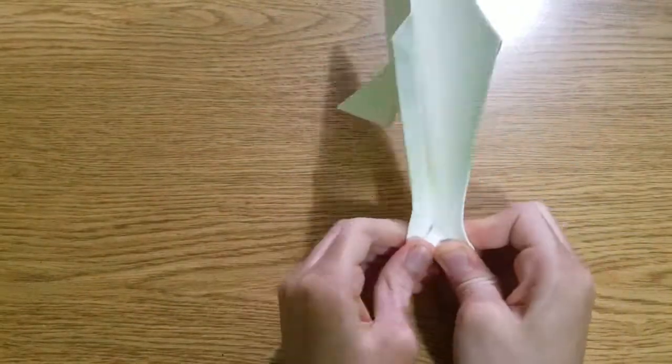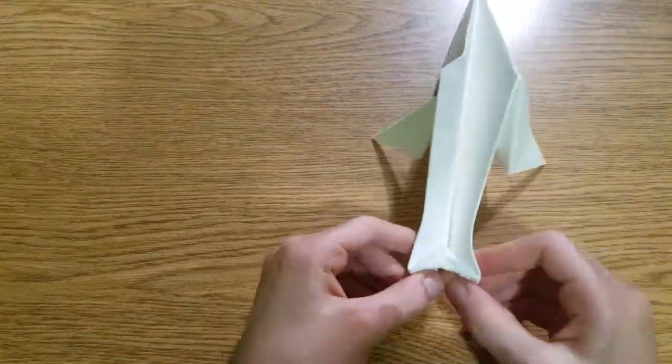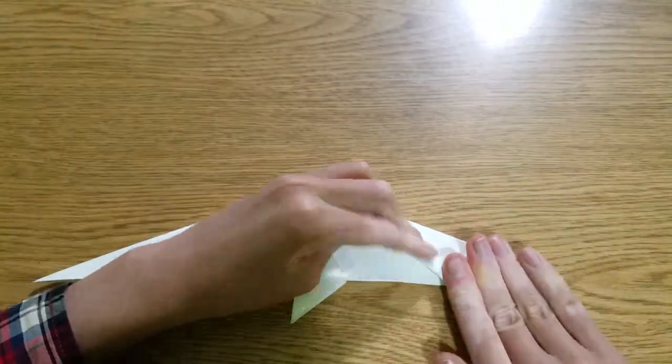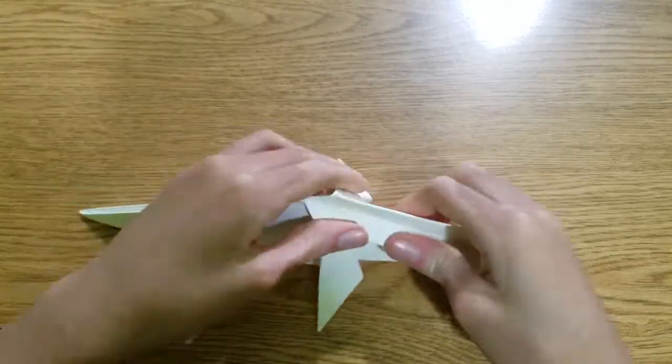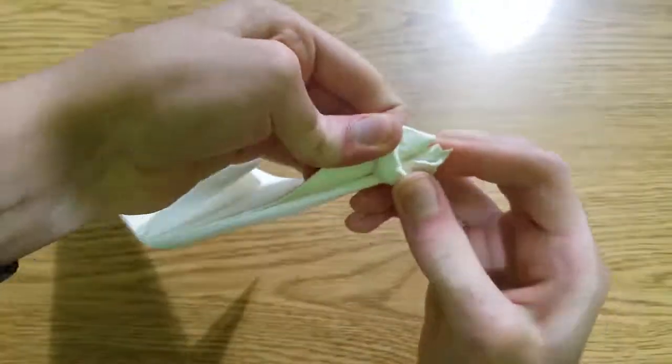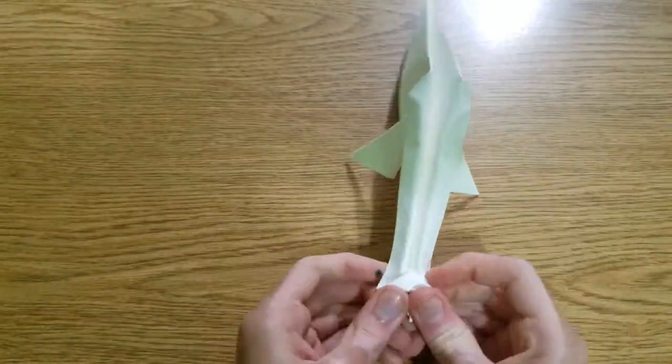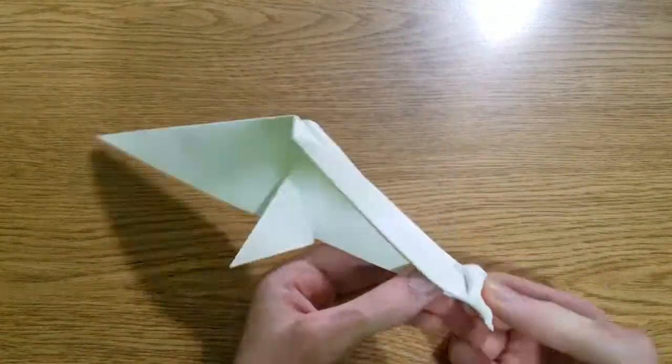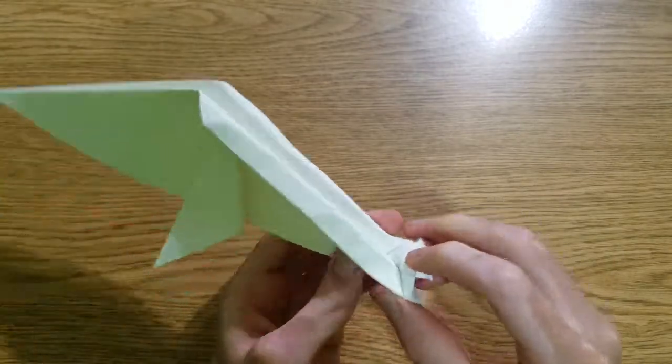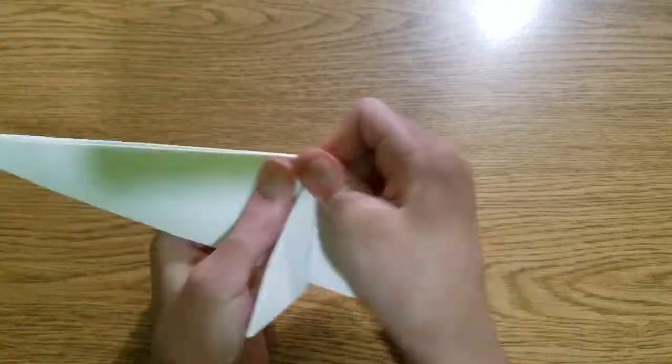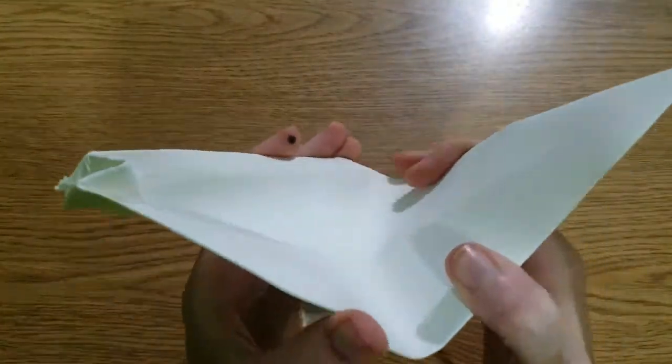Now I fold like this so that the fins are at the right angle. Now I'll unfold and inside reverse fold here to make the head.